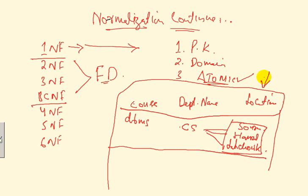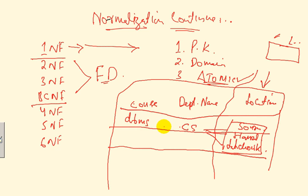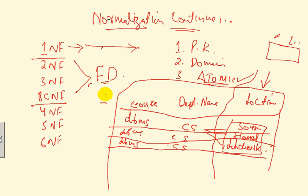We can fix this either by removing the non-atomic attribute and making a new separate table with location and a key from the original table, or we can repeat rows — for example, one row for DBMS/Sora, another for DBMS/Howell, another for DBMS/Lal Chowk. However, this introduces redundancy, which creates new problems.